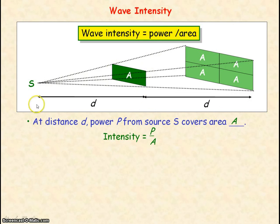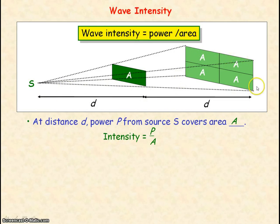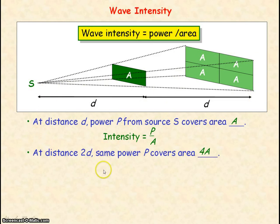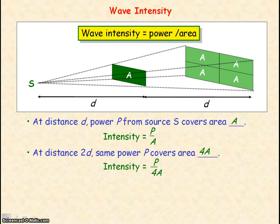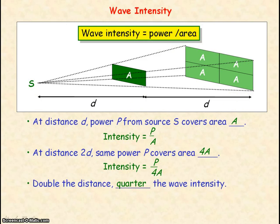If we now consider at distance 2D away from point S, the same power that passed through area A at distance d is now passing through an area of 4A at distance 2D from S. So we can say that the intensity at distance 2D away is equal to the power P divided by the area 4A. By doubling the distance, we have a quarter of the wave intensity.